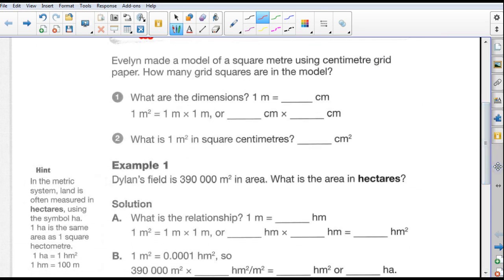All right, Evelyn made a model of a square meter using a centimeter grid paper. How many grid squares are there in the model? So what are the dimensions?